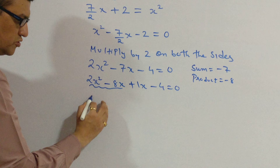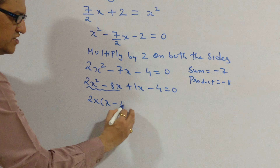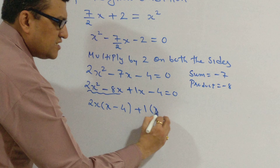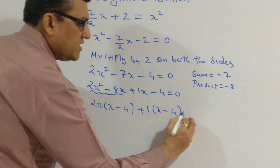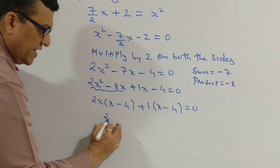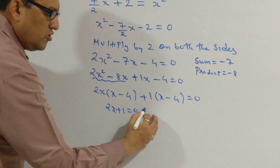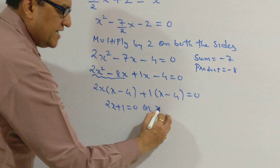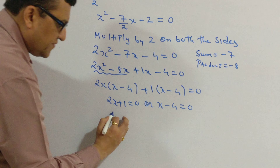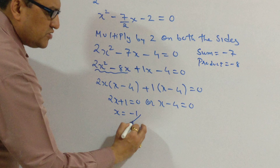We further factorize: 2x is common in the first two terms, giving 2x(x minus 4), and 1 is common in the last two terms, giving plus 1(x minus 4) equals zero. So (2x plus 1)(x minus 4) equals zero.